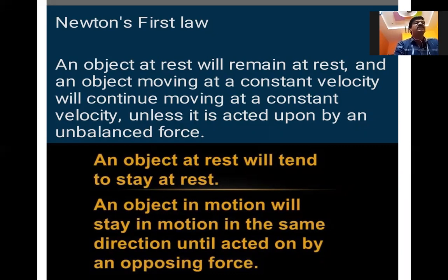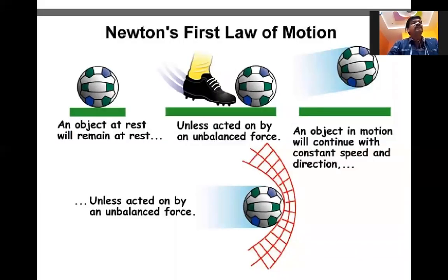An object in motion will stay in motion in the same direction until acted on by an opposing unbalanced force. We are observing a football — the ball is in the rest position. When the external force is applied, the ball comes into motion and will continually move in that direction only. When the net acts as an external unbalanced force, the ball comes into the rest position. Only the force causes the motion of the object. This is explained by Sir Isaac Newton in his first law of motion.